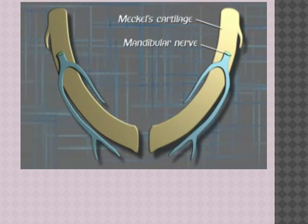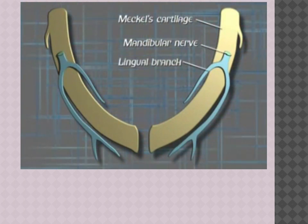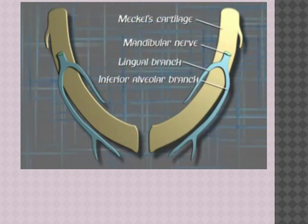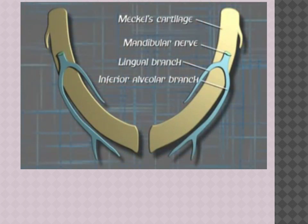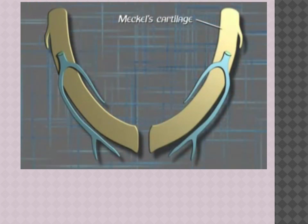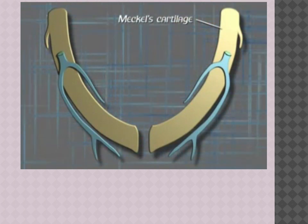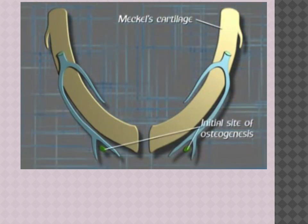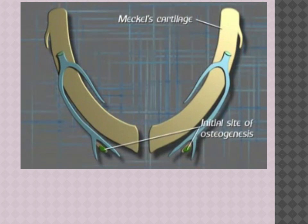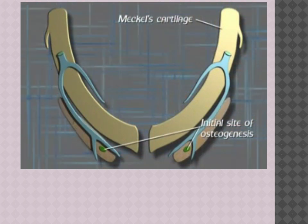The mandibular branch of the trigeminal nerve — the nerve of the first arch — has a close relationship to Meckel's cartilage, beginning two-thirds of the way along its length. At this point, the mandibular nerve divides into the lingual and inferior alveolar branches, running along the medial and lateral aspects of the cartilage respectively. The inferior alveolar nerve further divides into the incisor and mental branches anteriorly.